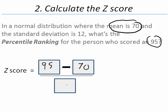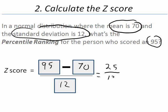And what goes in the bottom box? Our standard deviation, and that standard deviation is 12. We go ahead and do the math. 95 minus 70 is 25 divided by 12. That comes out to be 2.08.